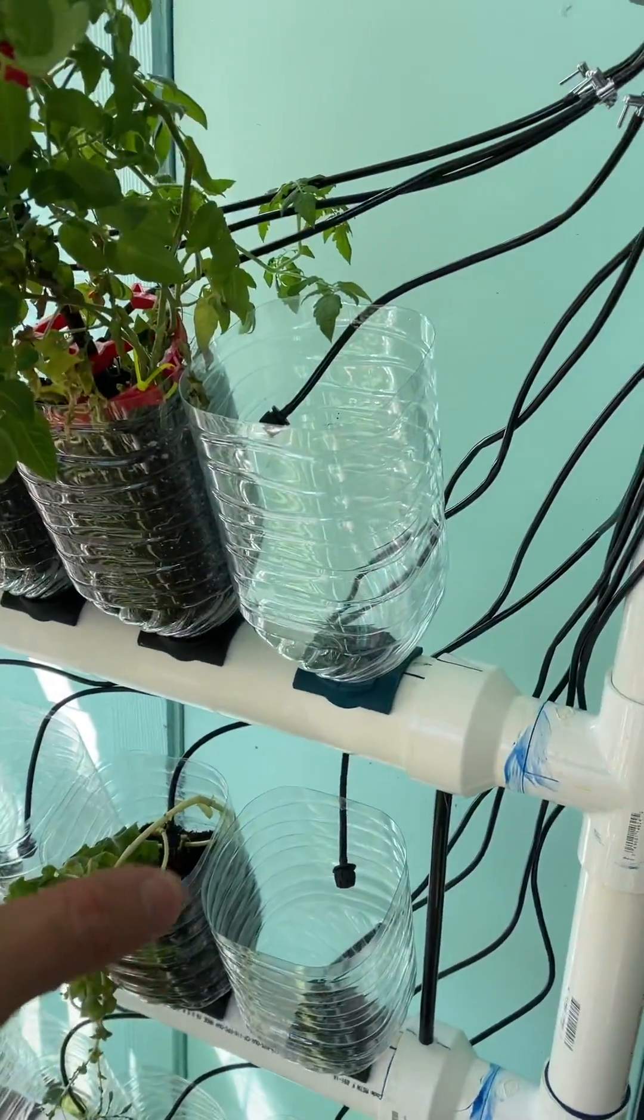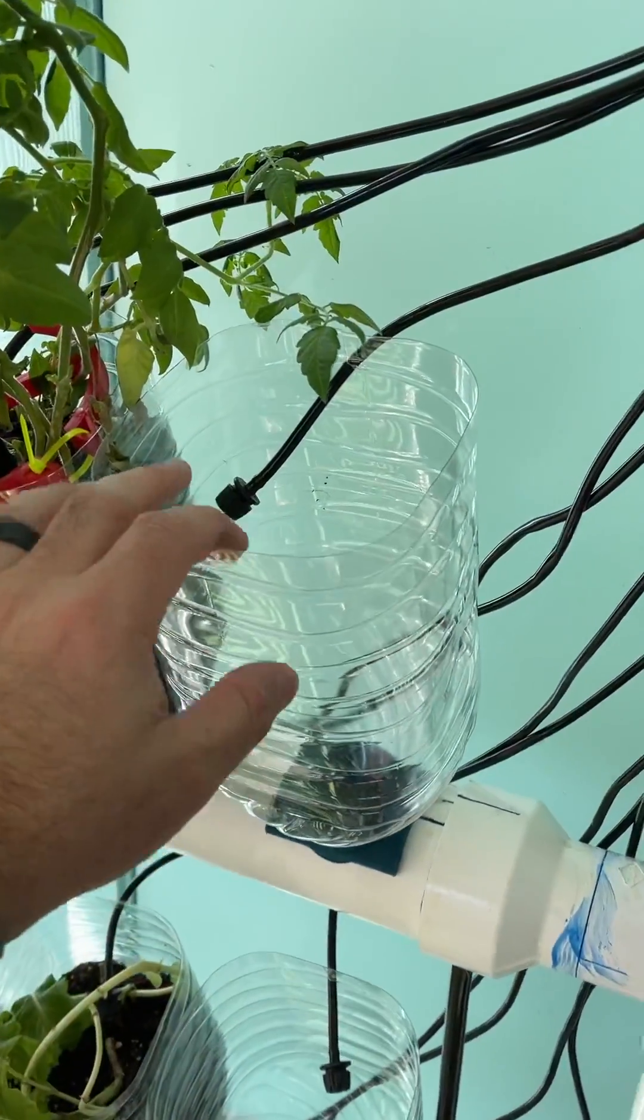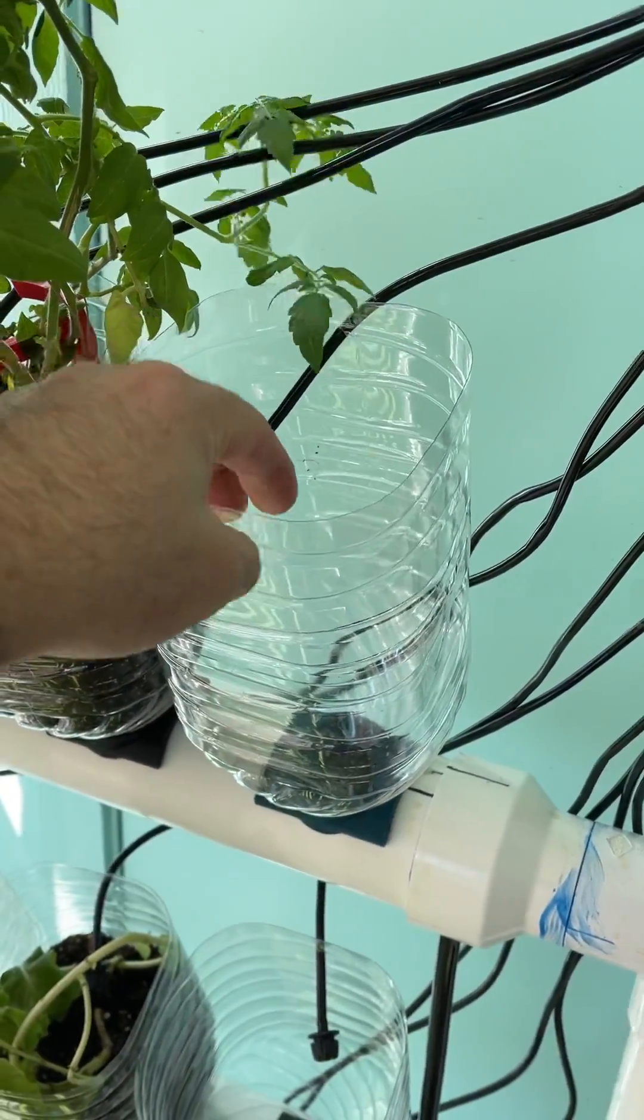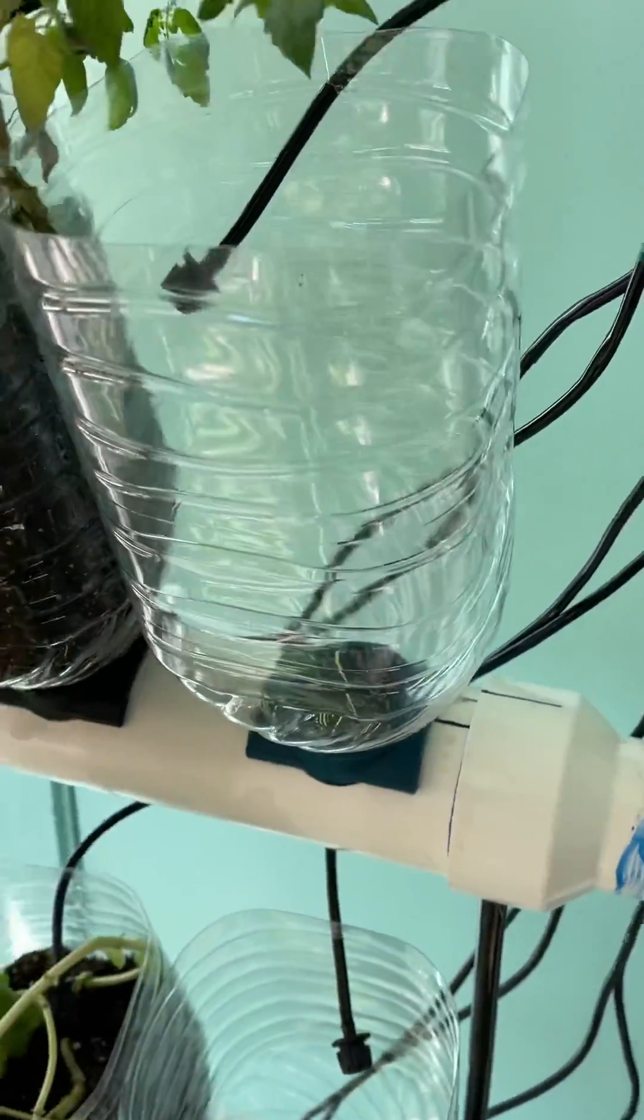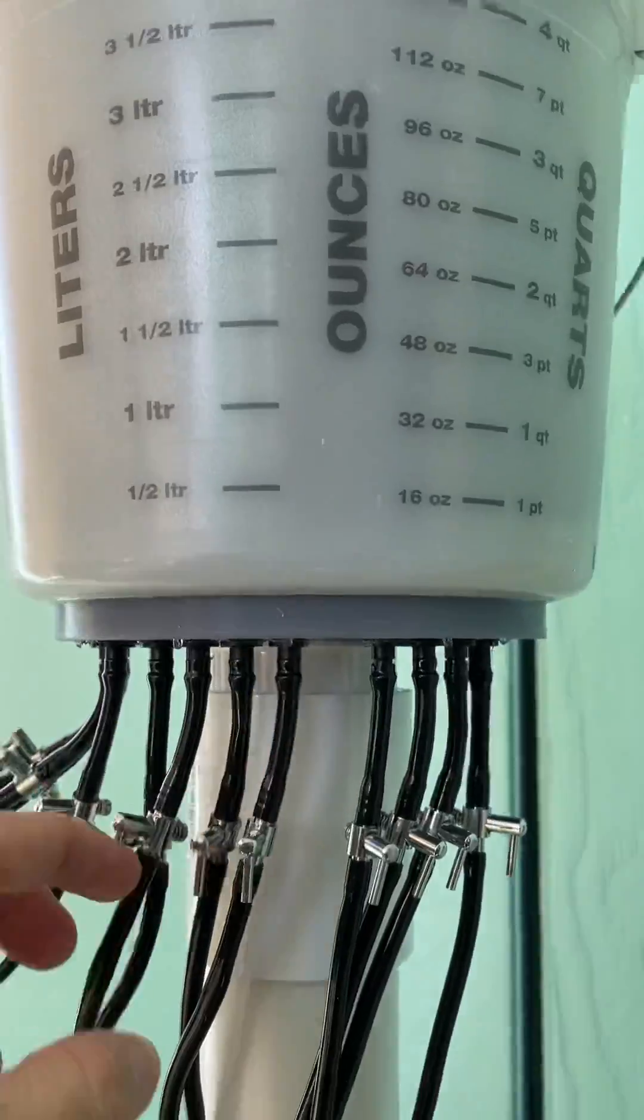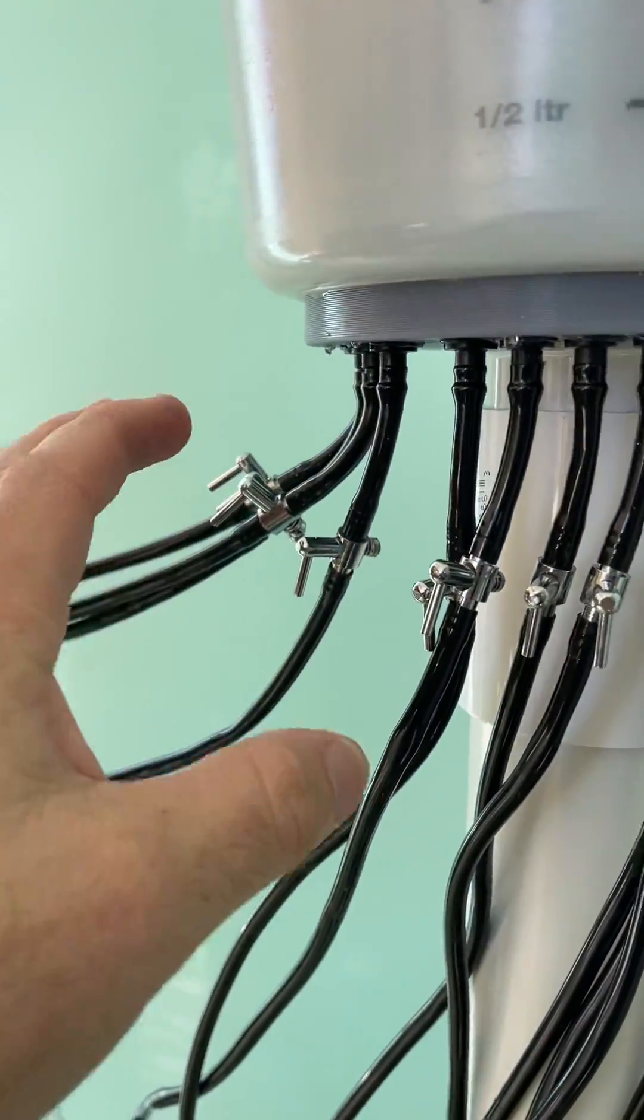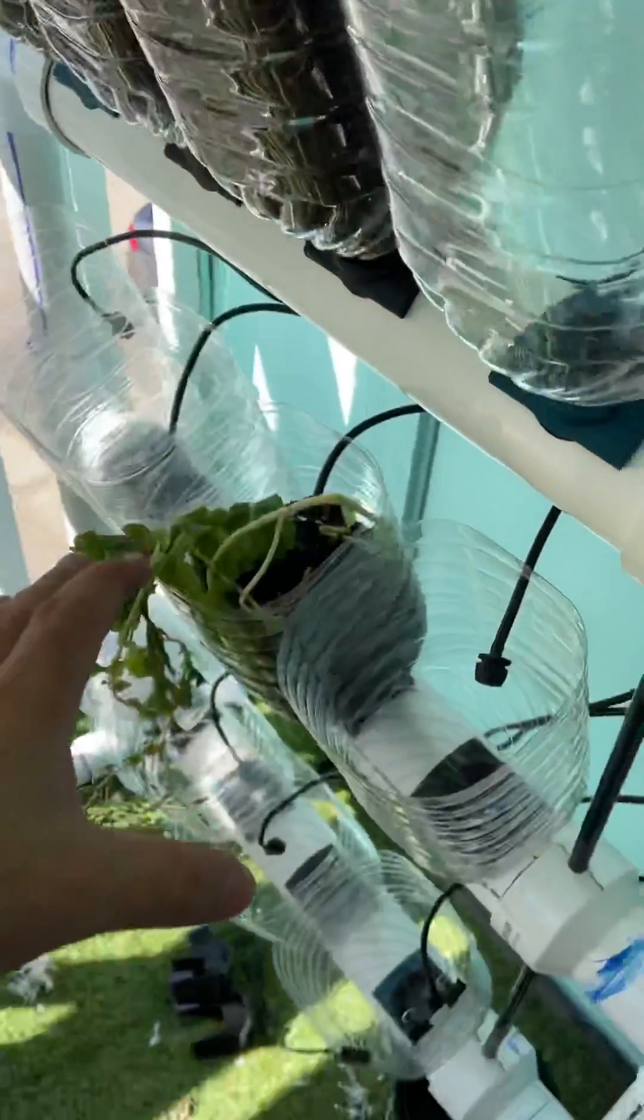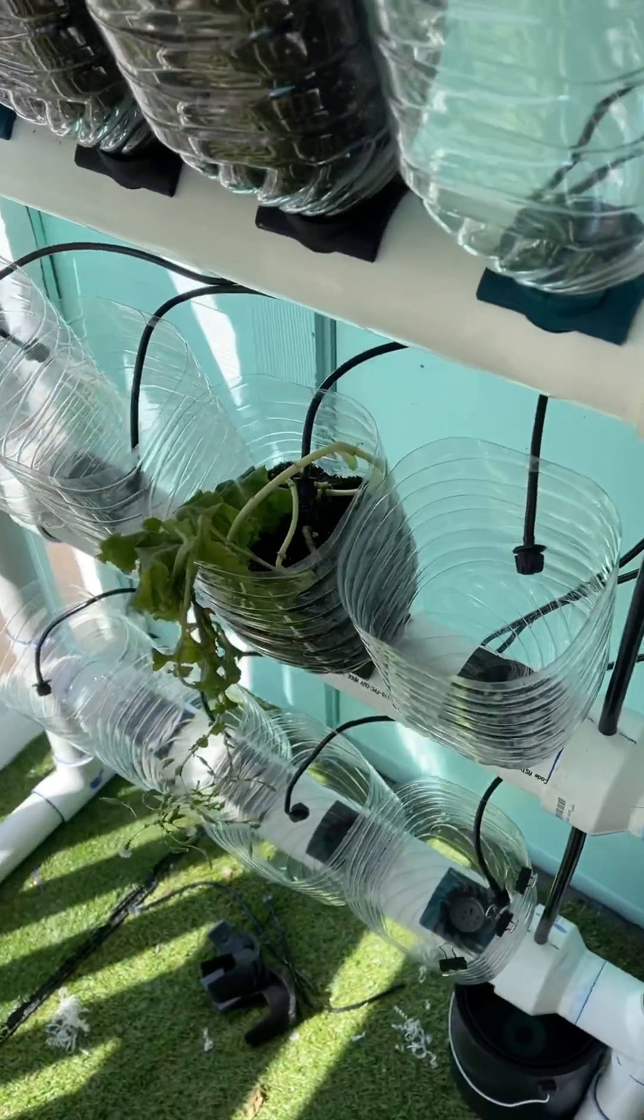Now part of the big deal on this is that we're using one gallon water bottles mounted inside here. This is our main reservoir, and we have these little air valves so we can control the flow to each one of these pots individually for different things.